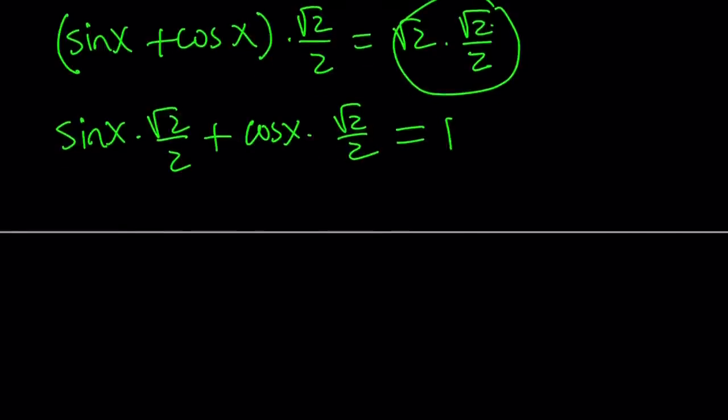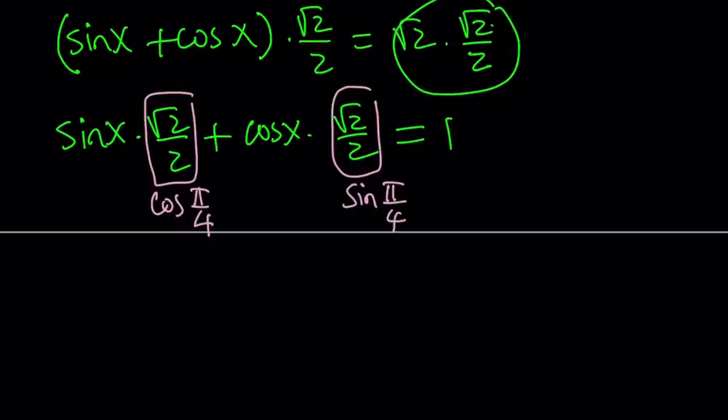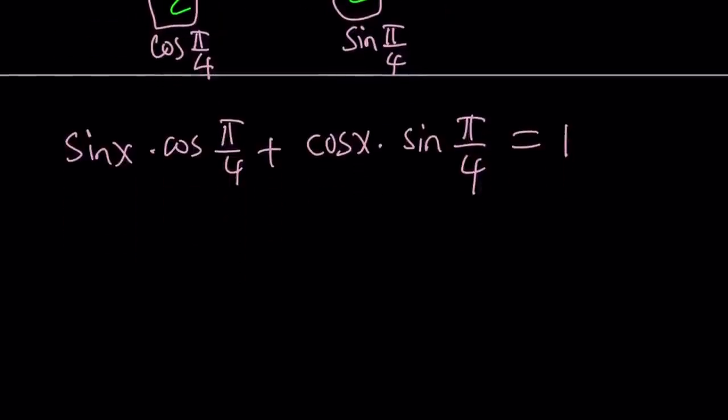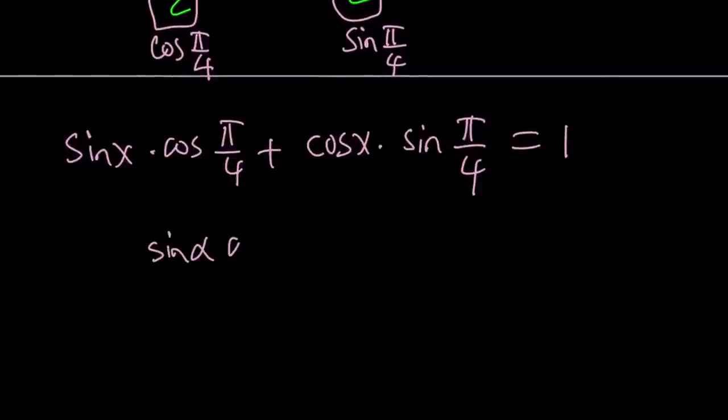Now the goal is to turn this into sine of a sum or the cosine of a sum. So I'm going to go ahead and replace this with cosine of pi over 4 and this with sine pi over 4. Sine x cosine pi over 4 plus cosine x sine pi over 4. Now if you look at the left hand side carefully you're going to notice that it follows the pattern sine alpha cosine beta plus sine beta cosine alpha.